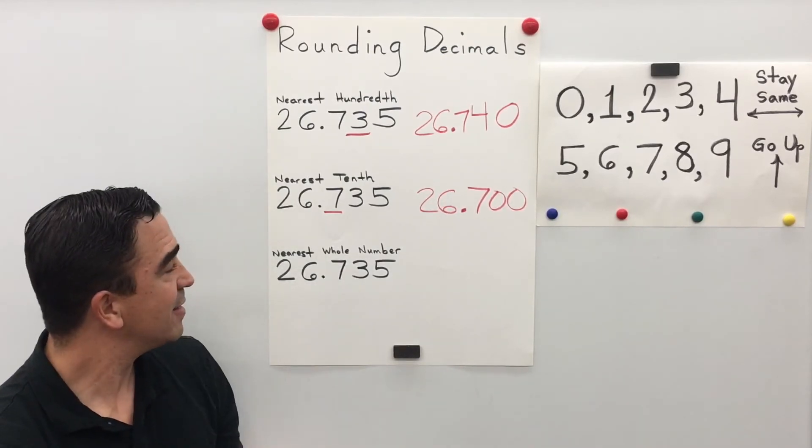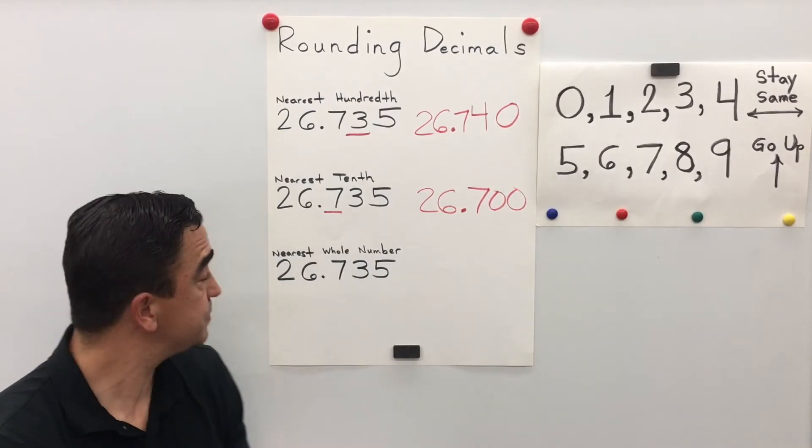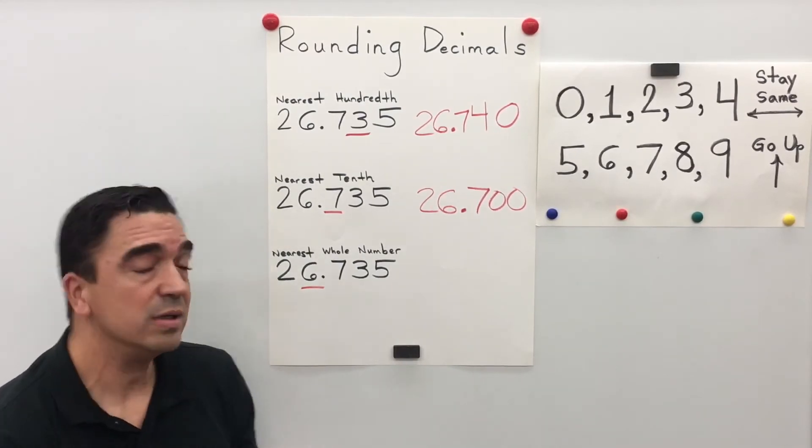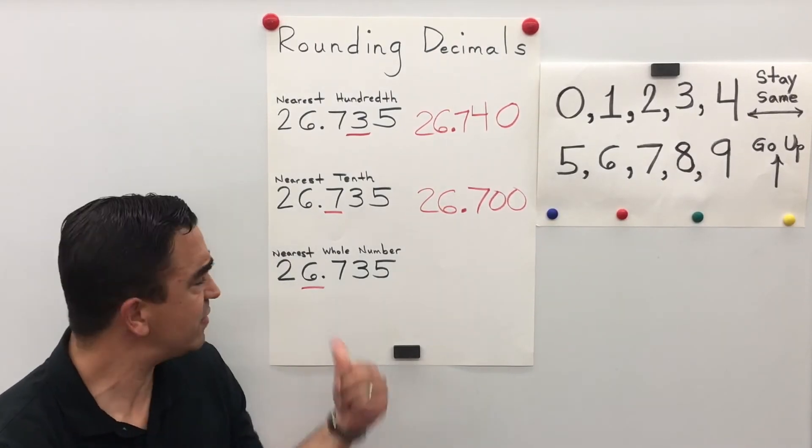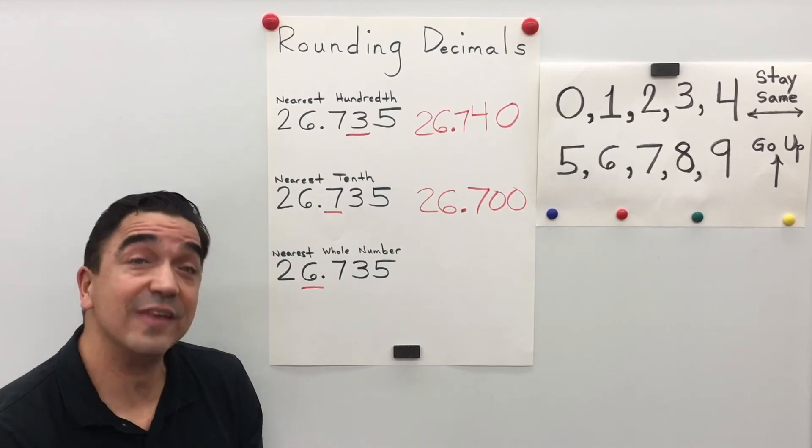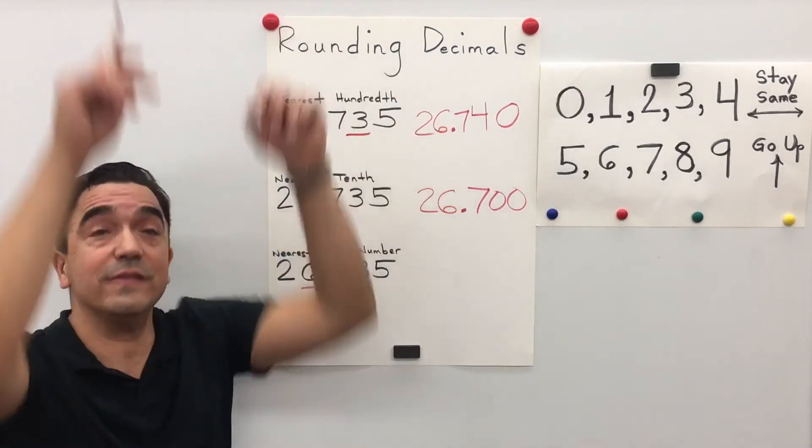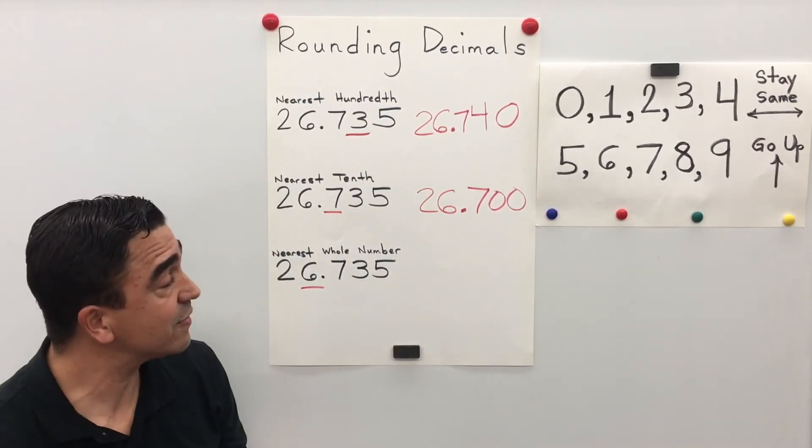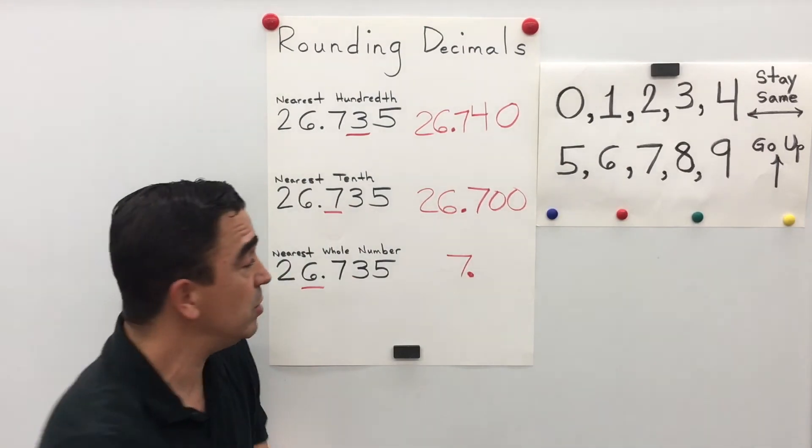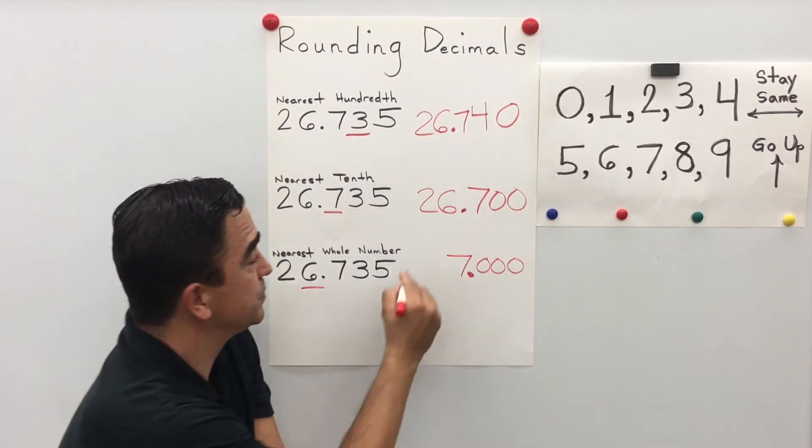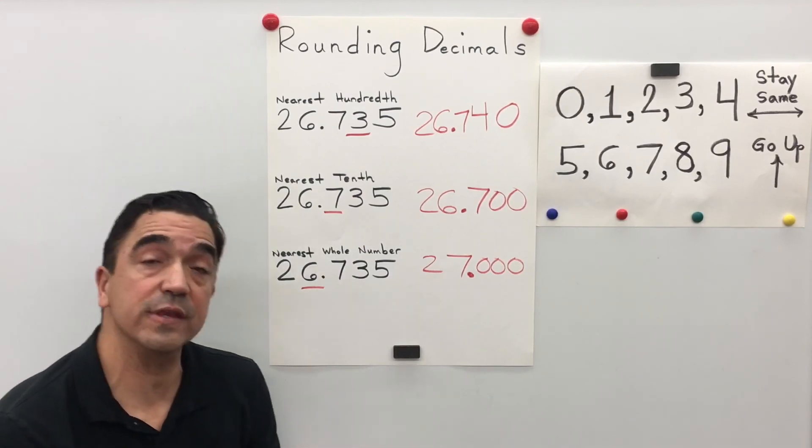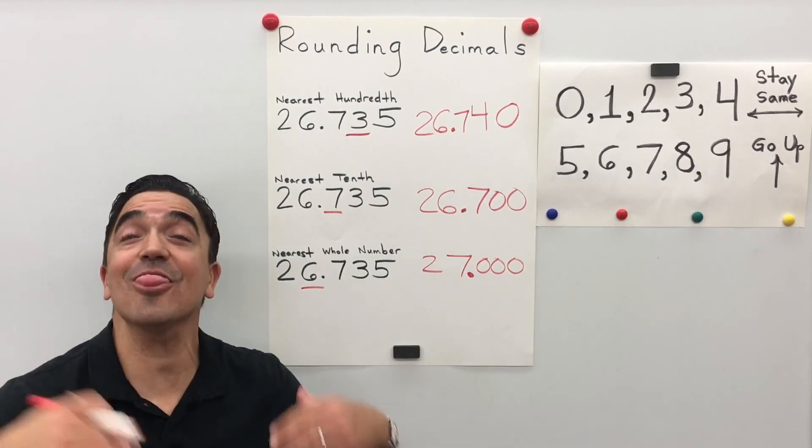Last problem. This time we're going to round to the nearest whole number. Which number is that? It's the digit in the ones place. Who's going to tell that six what to do? The seven in the tenths. The seven is going to tell the six in the ones to go up. So the six becomes a seven. All the digits to the right become a zero. 26 and 735 thousandths rounded to the nearest whole number is 27. And that concludes our lesson.